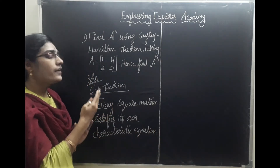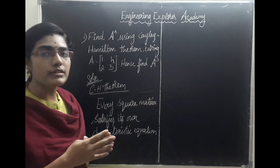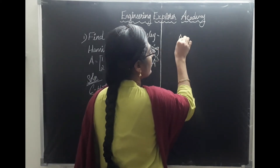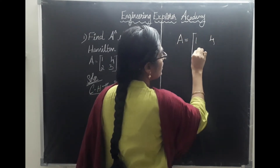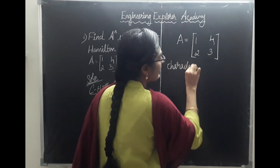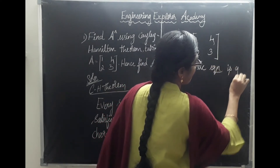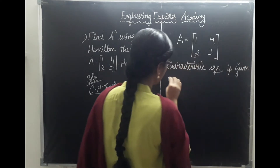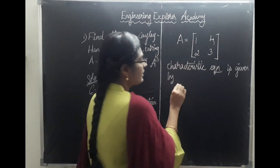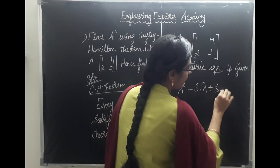For doing this problem using the Cayley-Hamilton theorem, first we need to find the characteristic equation for the given matrix. The matrix A equals [[1, 4], [2, 3]]. Since it is a 2×2 matrix, its characteristic equation is a quadratic equation: lambda squared minus S1 times lambda plus S2 equal to 0.